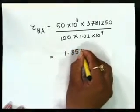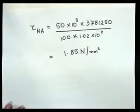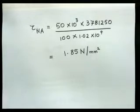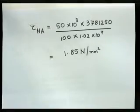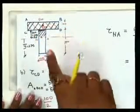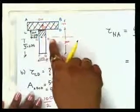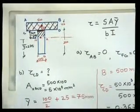We get it as 1.85 Newton per mm square. We have calculated the value of shear stresses at all the important points, that is AB, CD, EF, neutral axis, and FG. Now we have to draw the stress distribution diagram. To draw a stress distribution diagram, we will have to draw the T-section shape.